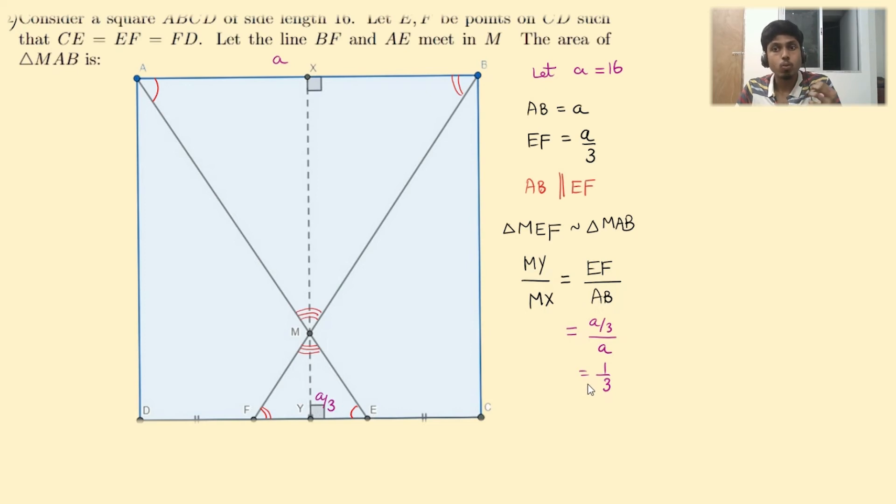So MY by MX is 1 to 3 ratio. But what is XY? We know XY is parallel to BC, and BXYC forms a rectangle. Thus XY equals BC. So XY equals A because it represents the height between the parallel lines. Parallel lines always have a common height between them throughout their length. And if M is a point that divides the line segment XY in the ratio 1 is to 3, that is MY by MX is 1 by 3, then let's figure out the value of MX.